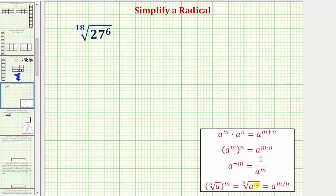If we have the nth root of a to the m, we can write this using a rational exponent, as we see here. Notice how the index n is the denominator of the rational exponent, and the exponent m is the numerator of the rational exponent.